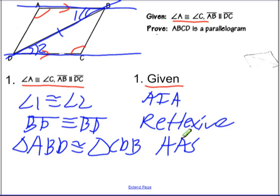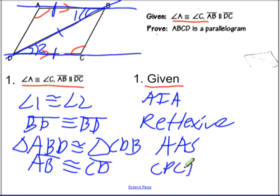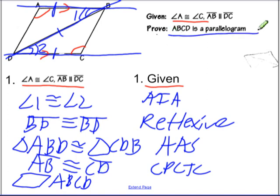And then I could use CPCTC to get, for example, one way I could do it is I could use CPCTC to get that AB and CD are congruent. So I could say AB is congruent to CD by CPCTC. And then I could prove that ABCD is a parallelogram, and my reason would be if one pair of opposite sides is both congruent and parallel, then it must be a parallelogram. So that's one way you could do this proof.